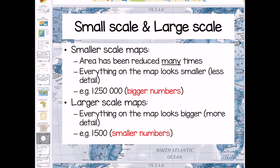This slide is really important, so you may want to screenshot it. In smaller scale maps, the area has been reduced many times, everything looks smaller, and there's less detail — and when we write the scale the numbers are bigger, for example 1:250,000 or 1:50,000. In a larger scale map, everything looks bigger, there's more detail, the area has been reduced fewer times, and the numbers are smaller — for example 1:500 or 1:250. That just depends on what you're comparing it to.